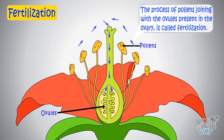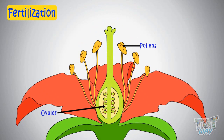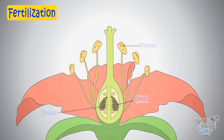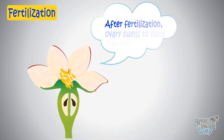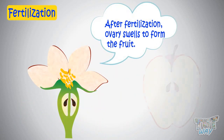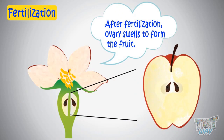Fertilization forms the seeds inside the ovary, and after fertilization, this ovary changes into a fruit. That's why seeds are found inside the fruit.